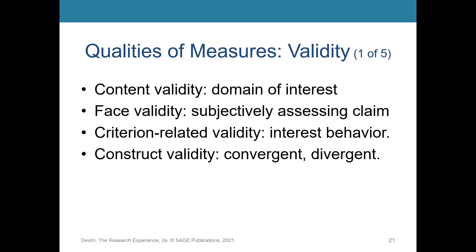Content validity asks whether your test is measuring your domain of interest. If I give you a test looking at math knowledge but ask history questions, that would not have good content validity. Face validity is looking at the test and seeing if it appears to measure what it claims to measure. Criterion-related validity has two types — predictive, which tries to make predictions about the future like an SAT score predicting college performance, and concurrent, which is about how well you're doing right now. Construct validity can be broken into convergent and divergent: convergent validity looks for agreement between two theoretically related measures, while divergent validity looks for distinction between theoretically unrelated measures.